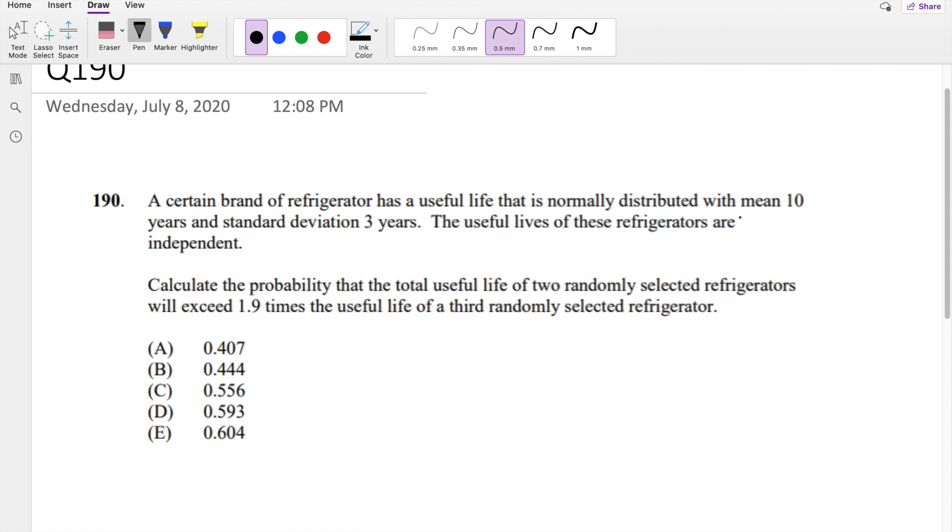So they're saying a random refrigerator has a mean of 10 and a standard deviation of 3 years. And they're saying if you pick a random refrigerator, okay so I'm going to call fridge 1 X. This is fridge 1, Y is fridge 2, and then Z is fridge 3.